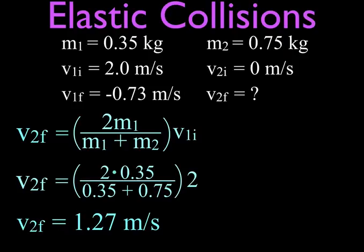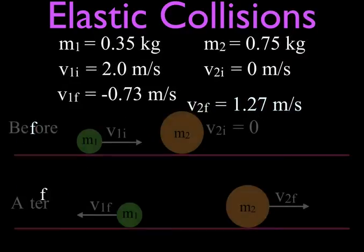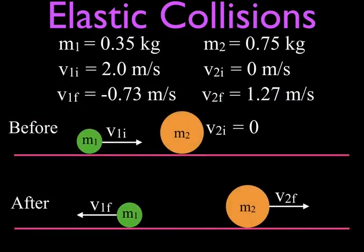You can think about it because mass number two is stationary, the other one hits it, and it moves off to the right. So there we go, that is both of the velocities for mass number one and mass number two. I just drew a little picture. This was the before picture, this one's at rest, this one's moving. Afterwards, this one bounces off and moves in the negative direction with a speed of 0.73 m/s. And this one, because this is an elastic collision, was stationary at rest and then moves off with a final velocity of 1.27 m/s.